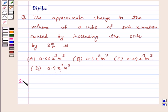So let's start the solution. Given side of the cube is x meter. Percentage increase in the side is 3%. This implies Δx is equal to 3% of x, that is 0.03x.